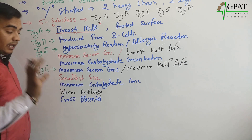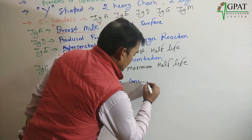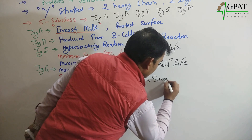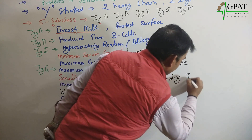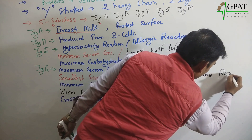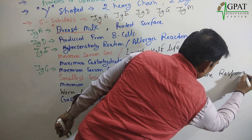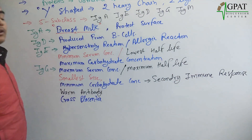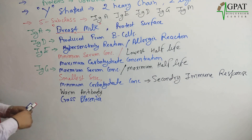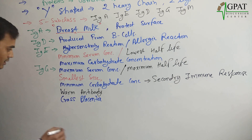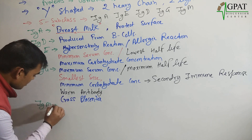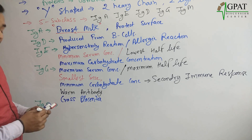IgG antibody is also mainly responsible for the secondary immune response. This is a very important point — IgG is responsible for the secondary immune response.